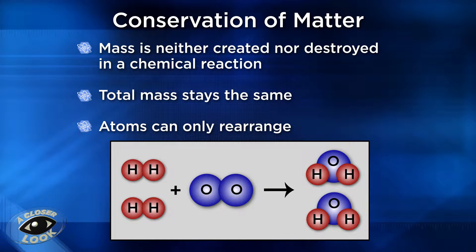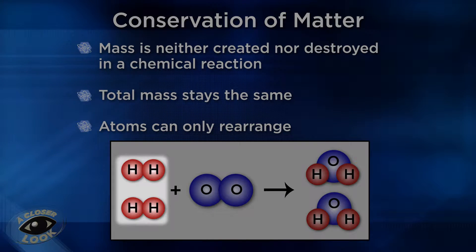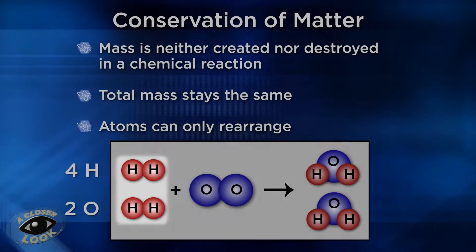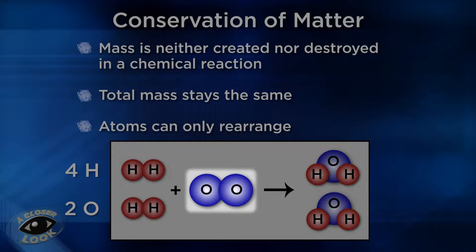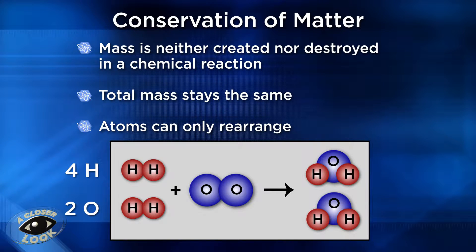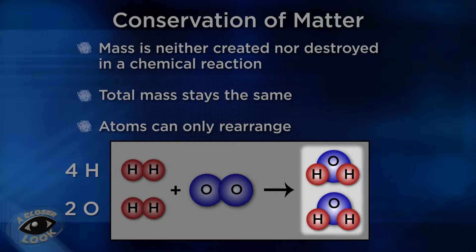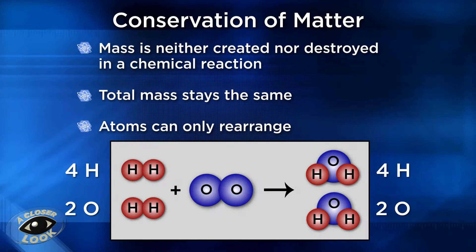Take a look at this example. On the reactant side, there are four hydrogens, and there are also two oxygen atoms present in one oxygen molecule. As the reaction takes place, the atoms are rearranging. When the reaction stops, there are two water molecules, but the number of atoms remains the same — two oxygen atoms and four hydrogen atoms on the product side.